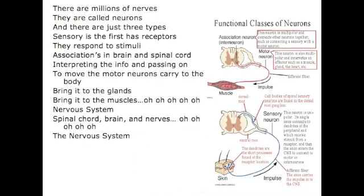There are millions of nerves — they are called neurons, and there are just three types. Sensory is the first; it has receptors that respond to stimuli. Association neurons are in the brain and spinal cord, interpreting the info and passing it on to the motor neurons, which carry signals to the body, bringing them to the glands and to the muscles.